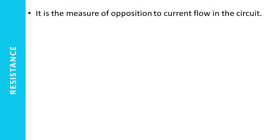Let's start by understanding what resistance is. Resistance is basically the property of a conductor by which it opposes the current flow in a circuit. If we put a quantitative value on that opposition to current flow, that quantitative value is called resistance. So it is the quantitative measure of opposition to current flow in a circuit.